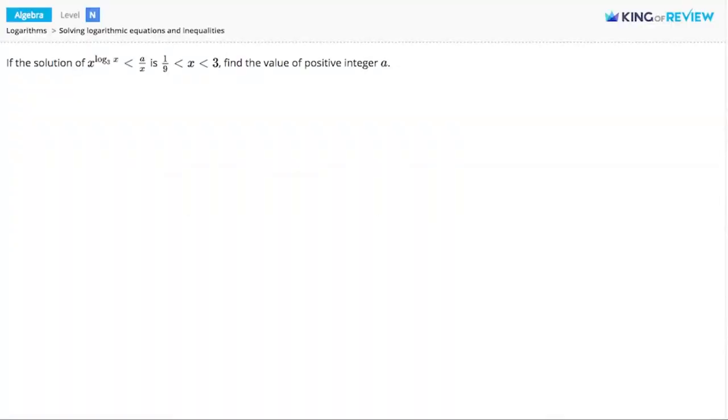Hi, this is King of Review. Here we have a problem that's not quite complete. x to the log base 3 of x is less than a over x, where we don't know a. And we have a solution: 1 ninth is less than x is less than 3.